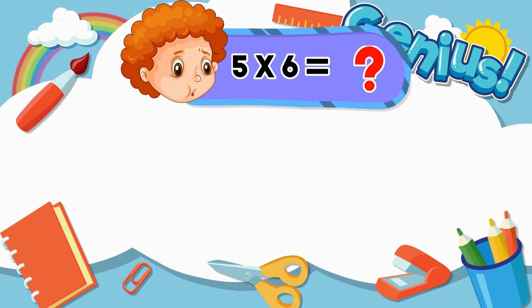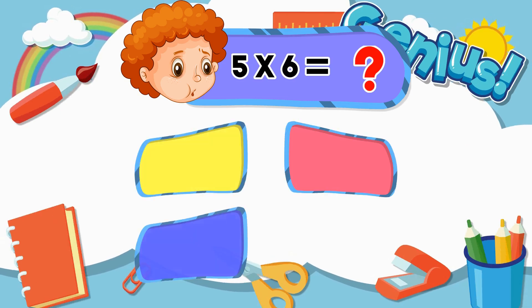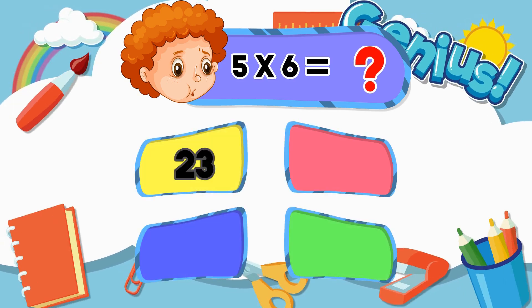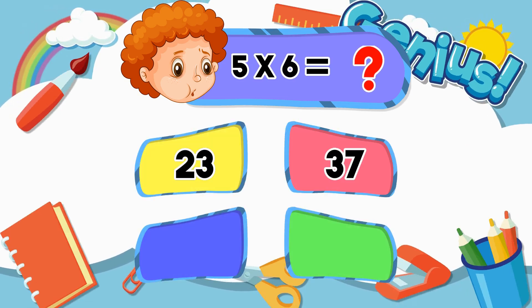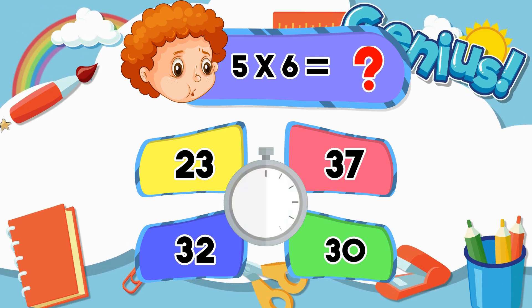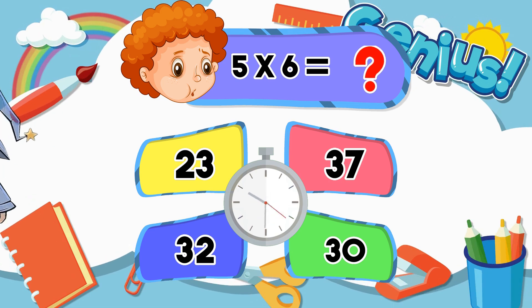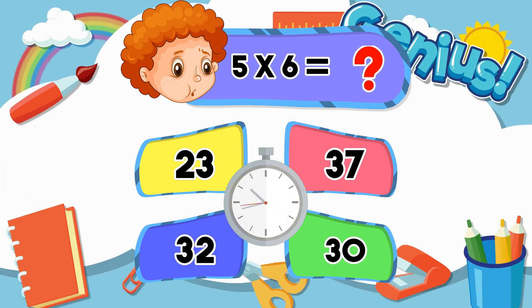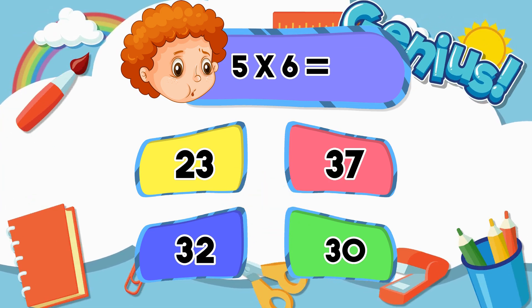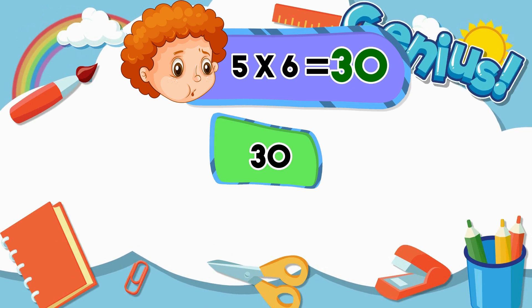What is five times six? Twenty-three, thirty-seven, thirty-two. [Answer:] Thirty.